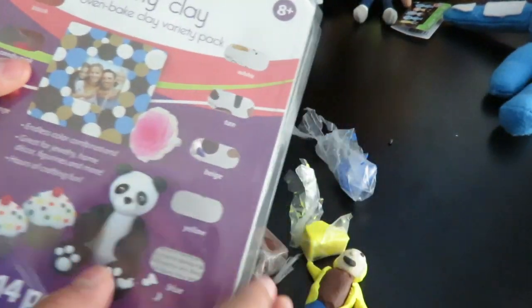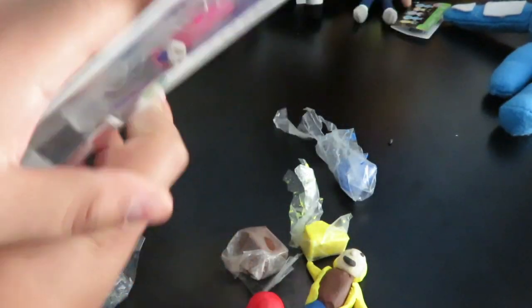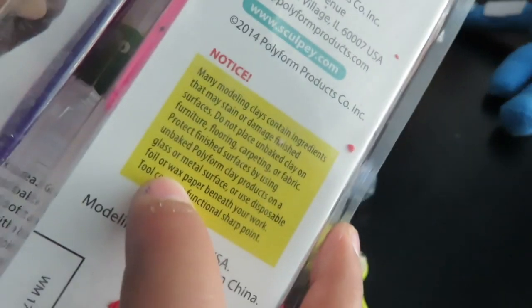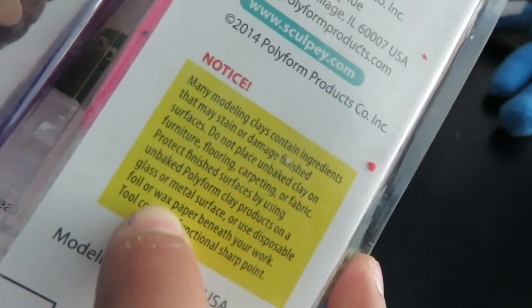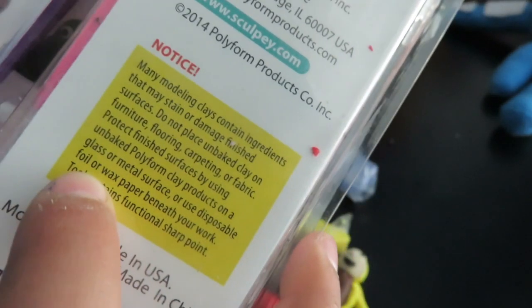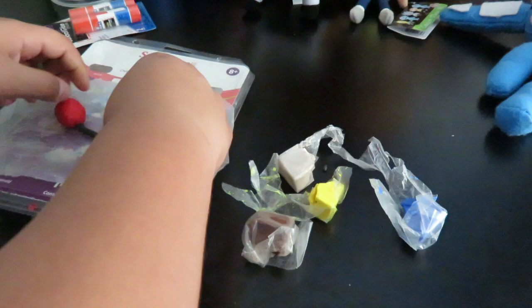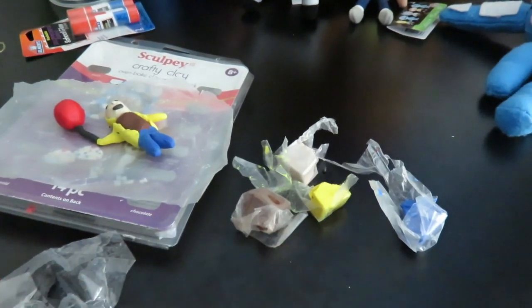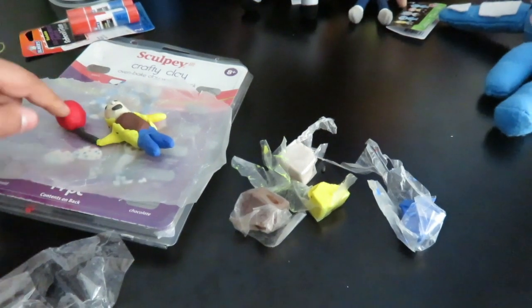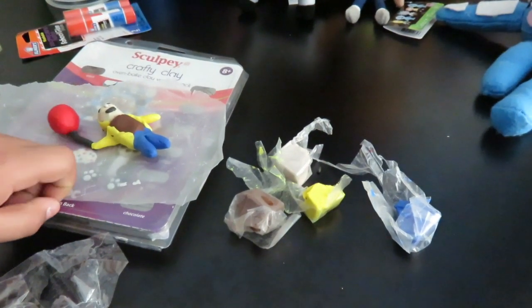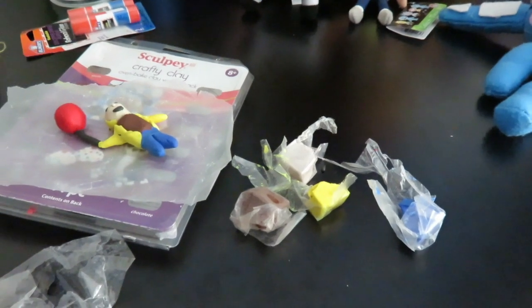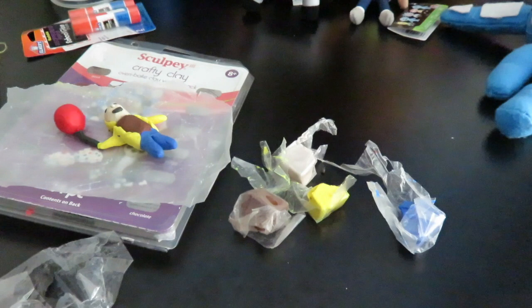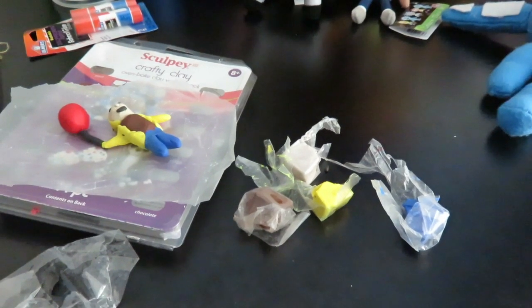I used Sculpey clay, and it says on the back that you use wax paper. Wax paper, foil, put him on the wax paper. You could put it on for, my mom usually puts it on for me for about 10 minutes. And you could put it on there for however, like 12, 13 minutes, however you want. So I'm going to go do that and I'll be right back.